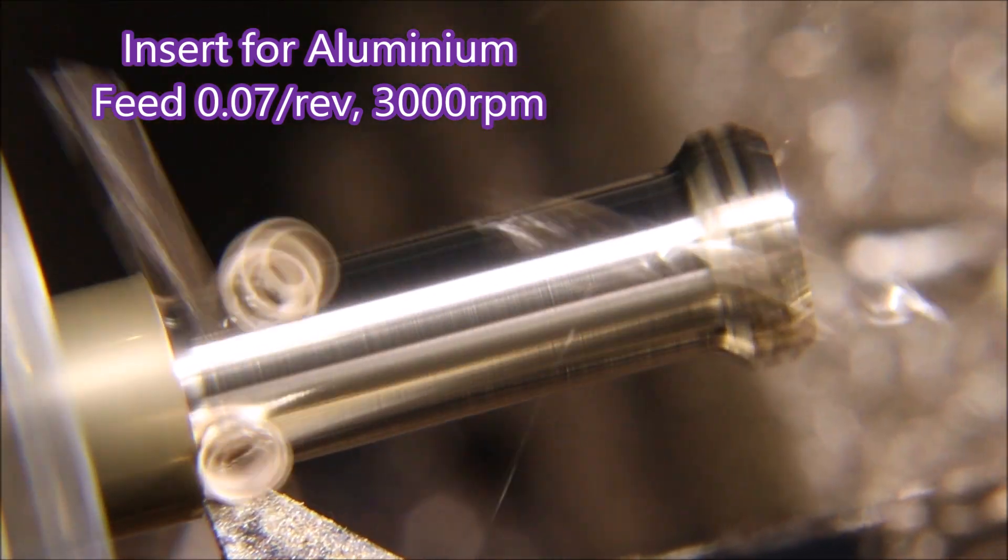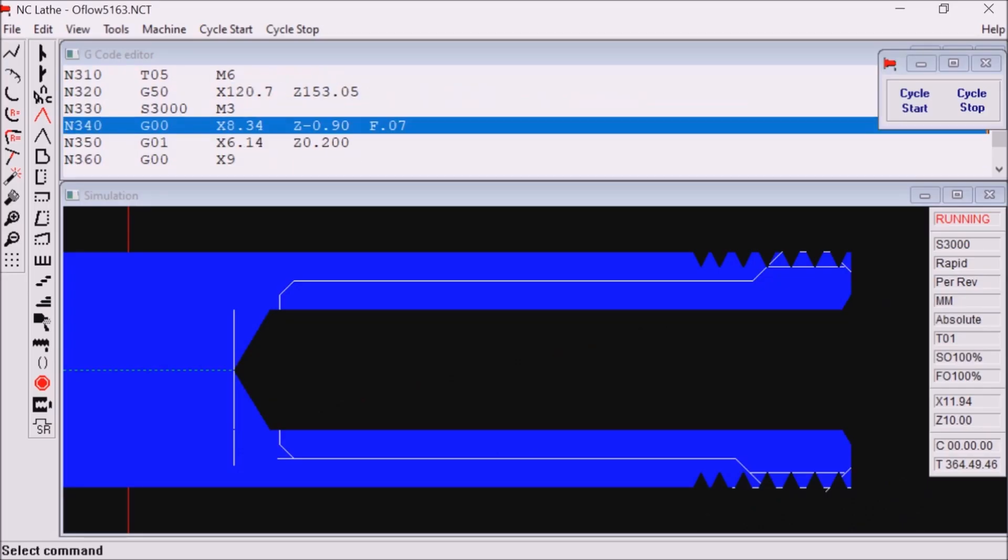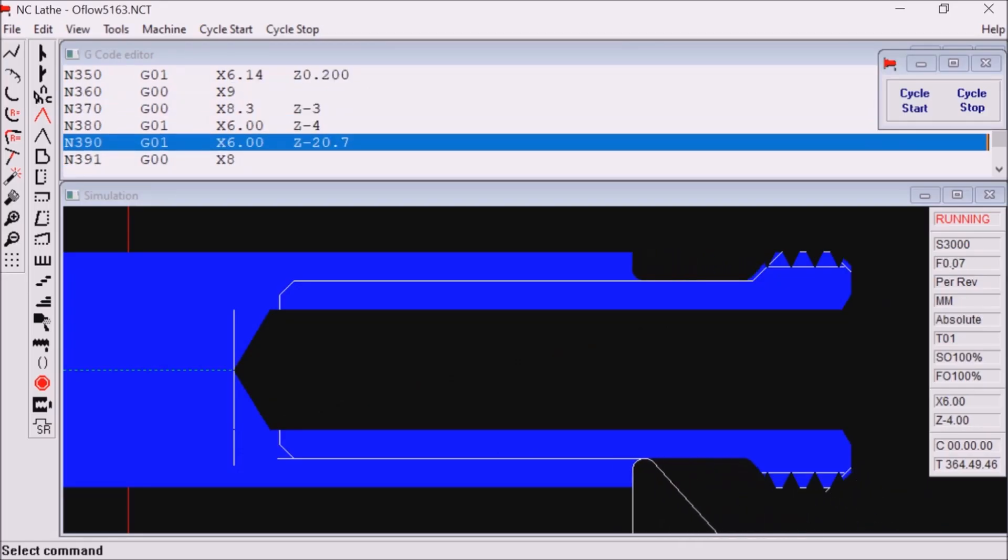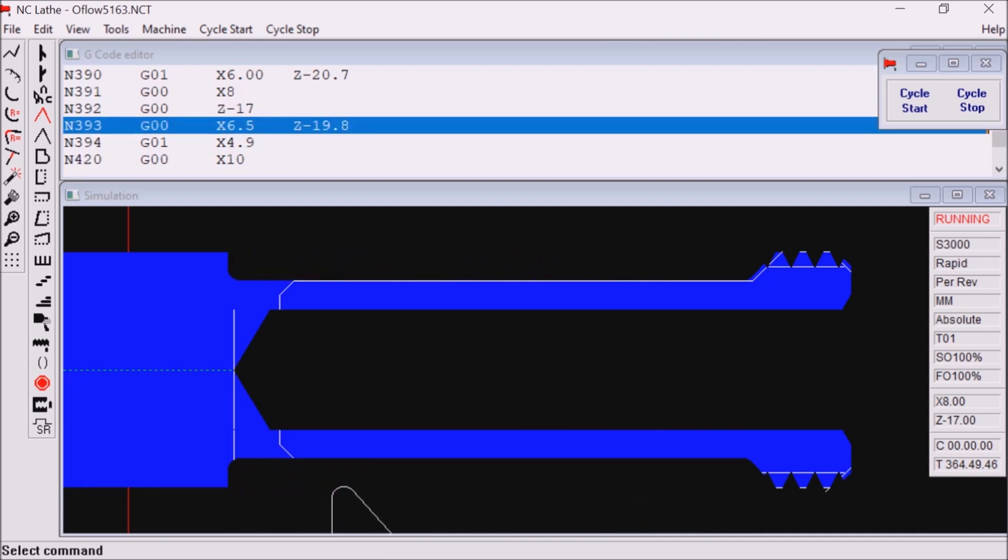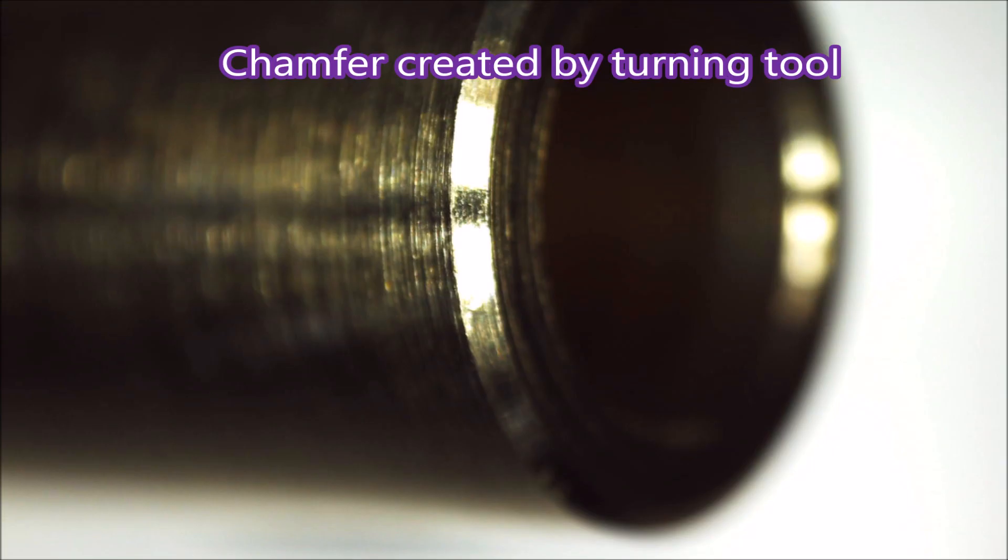This little dance that you see the turning tool do is just to put a small chamfer on the end of the part. I was using the parting tool, but with a 0.05 radius on the corner, it was impossible to get a decent finish, which I got by using the turning tool, as you can see there.